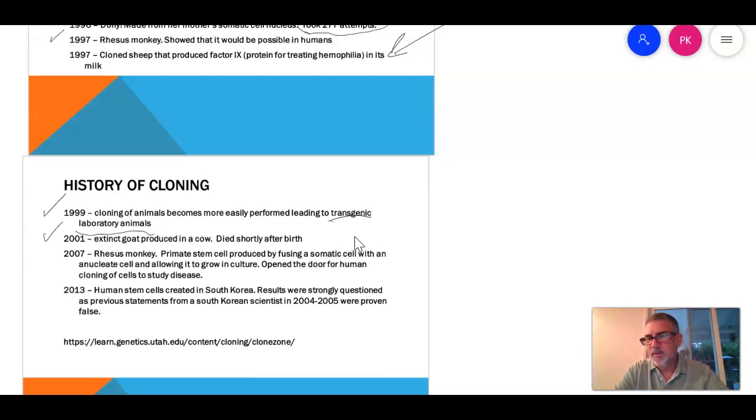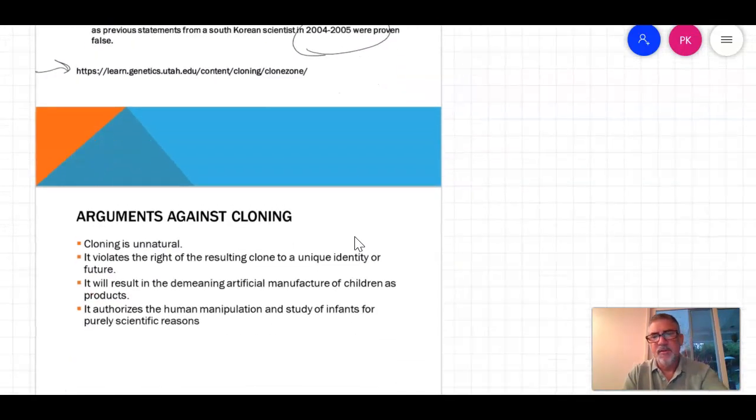2001, we bring back an extinct goat. It only lived for a couple months, I think. But hey, Jurassic Park. That's the author of Jurassic Park. We wrote the book that you're starting to read this week that showed it was possible. All right, 2007. I get a rhesus monkey primate stem cell fused by somatic with an anucleic cell. All right, so we're able to do that with a rhesus monkey. So it opens the door for human cloning. And then the controversial one. Human stem cells created in South Korea. And remember, that's following Hong's 2004-2005 debacle. And the scientists were very skeptical. All right, so I'll show you this in a little bit. And then we'll talk about that. Look, I'm looking at it. It gives you a little better view into all of these advances.